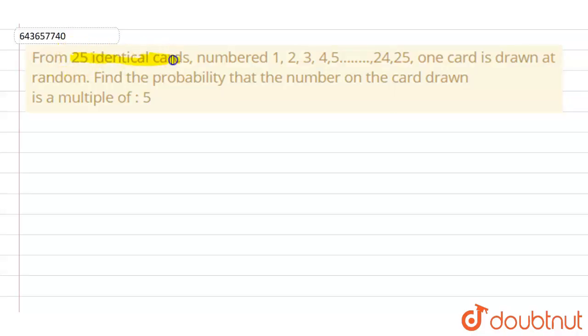We have given 25 identical cards numbered from 1 to 25 and we need to select one card such that it is a multiple of 5 and we need to find the probability. Now let's calculate it. First of all, we have given that there are total...